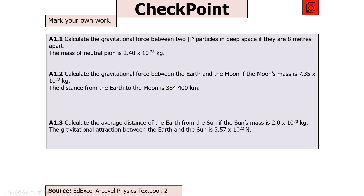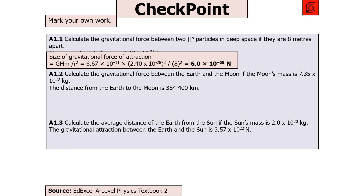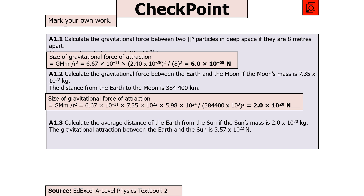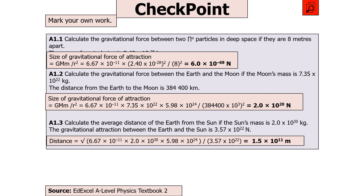Using F = GMm/R²: for the pi-zero particles, F = 6.0 × 10⁻⁶⁸ N. For the Earth-Moon system, F = 2 × 10²⁰ N — always remember to square R. For the Earth-Sun distance, rearrange to make R the subject: R = √(GMm/F), giving 1.5 × 10¹¹ m.